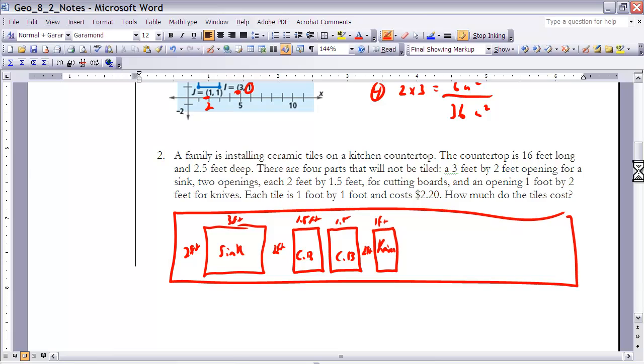So let's take a look at example two here. It says a family is installing ceramic tiles on a kitchen countertop. The countertop is sixteen feet long and two and a half feet deep. There are four parts that will not be tiled: a three foot by two foot sink opening, two openings that are two feet by one and a half feet for cutting boards, and an opening that's one foot by two foot for knives. Each tile is one foot by one foot and costs two dollars and twenty cents. How much do the tiles cost?